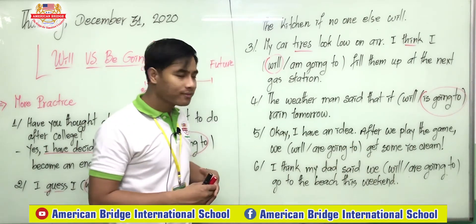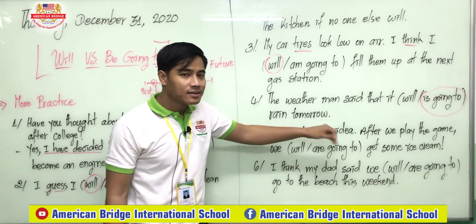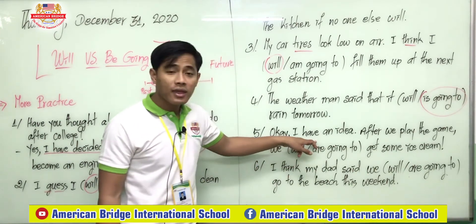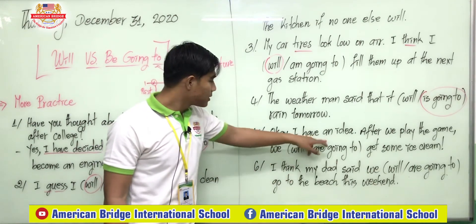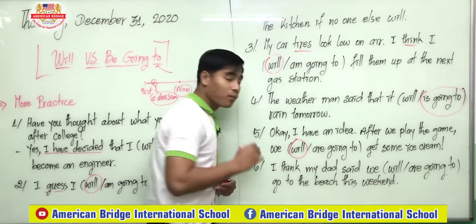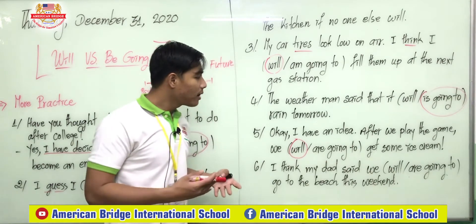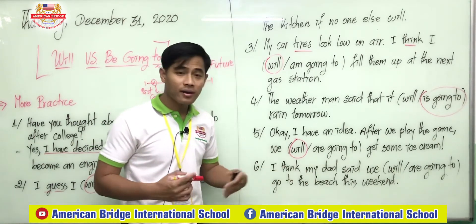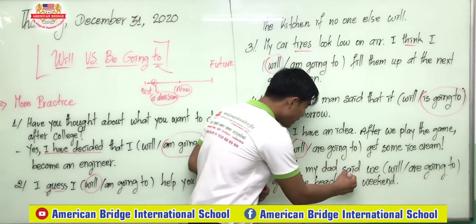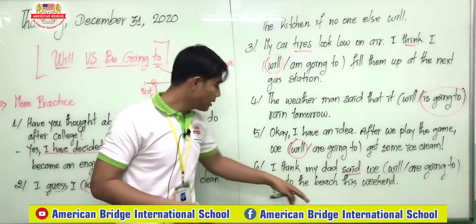For number five, is it a plan? 'I have an idea' — meaning now, they are playing the game. After we play the game, we will get some ice cream. Number six: 'My dad said we are going to go to the beach this weekend.' My dad said — meaning this family has a plan to do something this weekend. So the answer is 'be going to.'